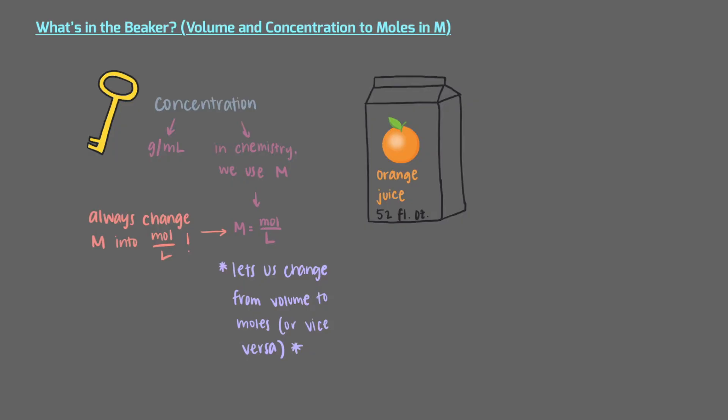When you buy orange juice at the grocery store, it usually comes in a carton of 52 fluid ounces. 52 fluid ounces is equal to 1.54 liters. We all know that orange juice has vitamin C in it, and some sources say that the concentration of vitamin C in orange juice is 82.5 milligrams per 100 milliliters. This is the same as saying that the concentration is 0.00468 molar. So how do we calculate the amount of vitamin C in moles in a 1.54 liter carton of orange juice?